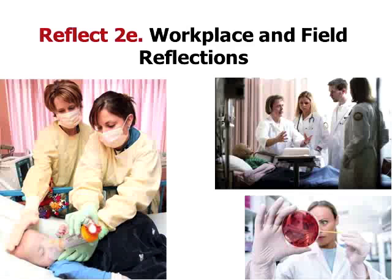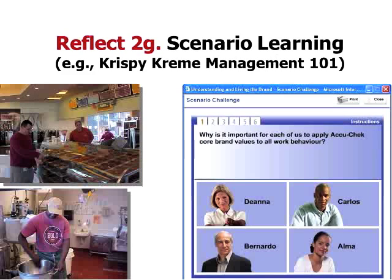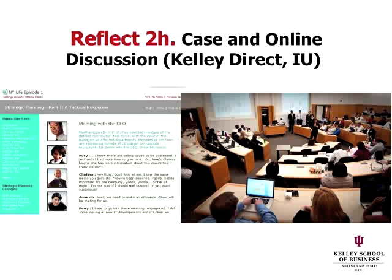Scenario-based learning — having people go through a set of scenarios. Maybe it's sales training, military tactical operations, or ethics and sexual harassment training. You might be doing time-revealed scenarios where pieces of the scenario are revealed over time. Here in Bloomington, Option 6 is a company designing these scenarios, and Wisdom Tools is another. You go through a video or set of still images about Krispy Kreme and then answer some questions. You might have cases on the web like at the Kelley School of Business at IU — cases with a marketing manager, a CFO, a CIO, and you synthesize information to make decisions on these online cases.